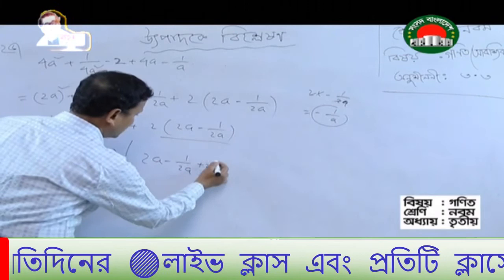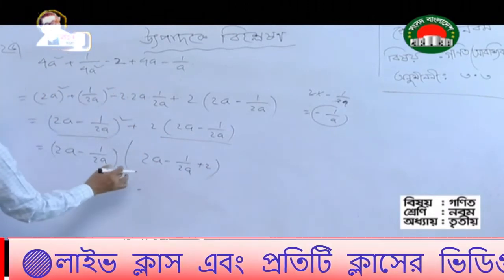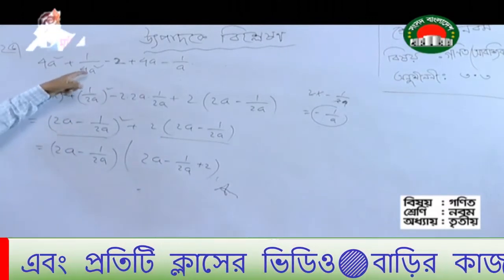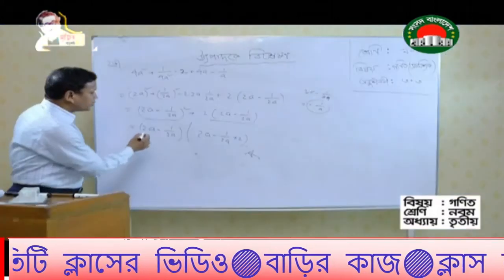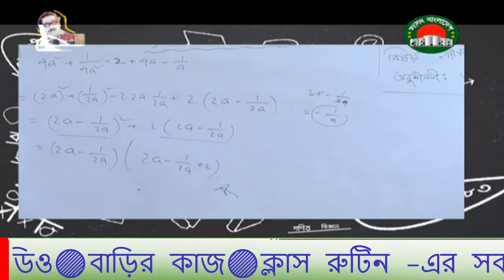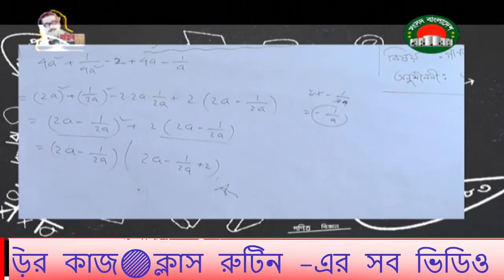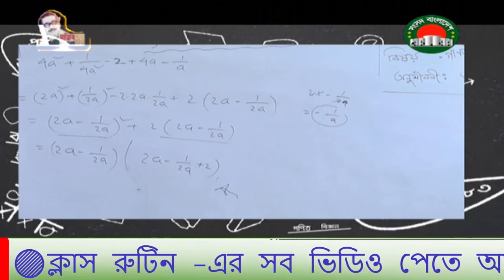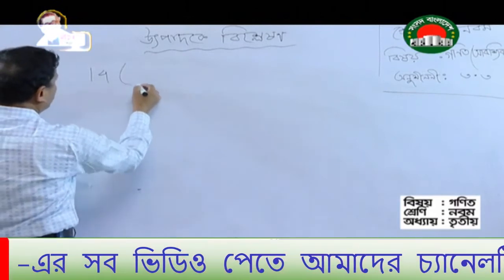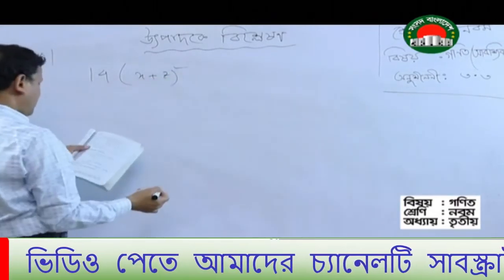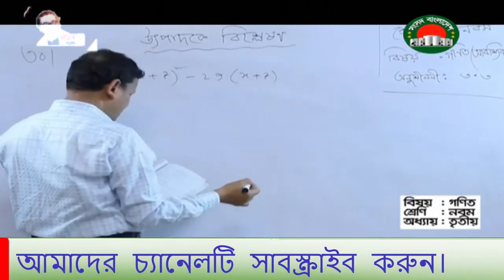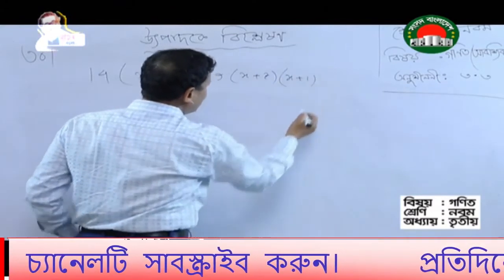So the square is 2a minus 1 by 2a. Plus 2. Look: 4a squared plus 1 by 4a squared minus 2 plus 4a minus 1 by 8a. You have to write the decision. Three steps. Fourteen, x plus, z.